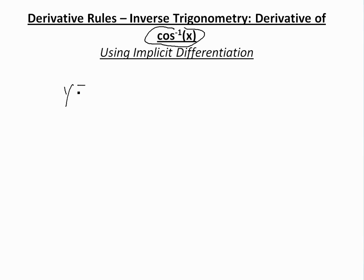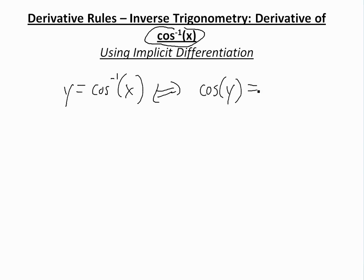So basically, let's say if you have the function y equals inverse cosine of x. If you see my video on inverse functions and on inverse trig, this is basically a way of writing cosine y is equal to x, where in this case you're solving for y, and where this is defined for y between zero and pi — that is, y is greater than or equal to zero and less than or equal to pi.